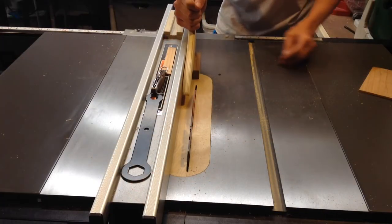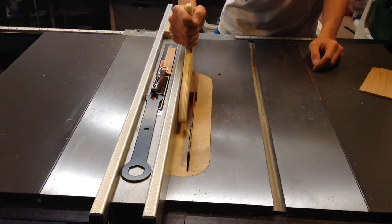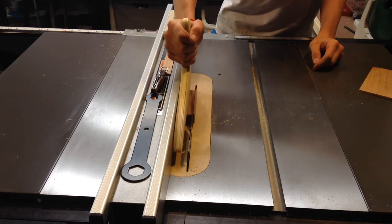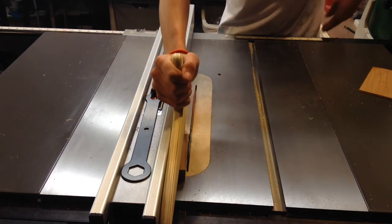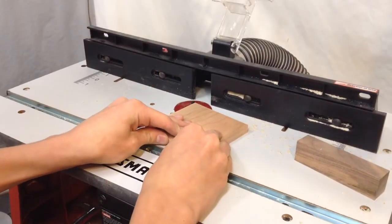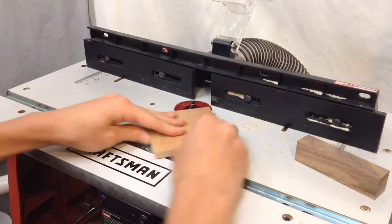And I'm just cutting this piece down a little bit smaller at the table saw. And now I'm just rounding this all over with an eighth inch round over bit.